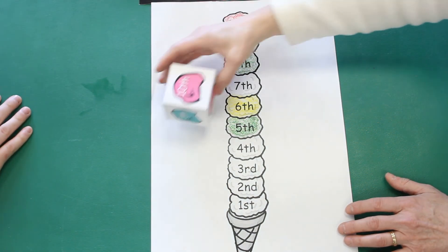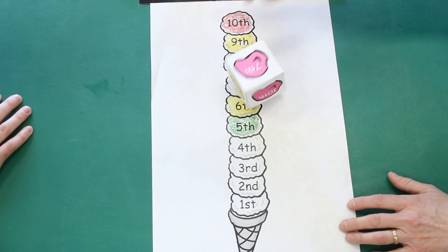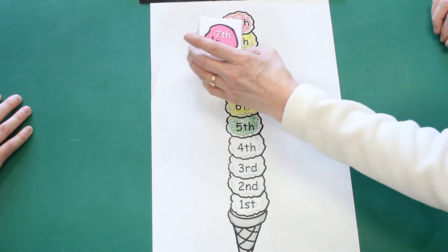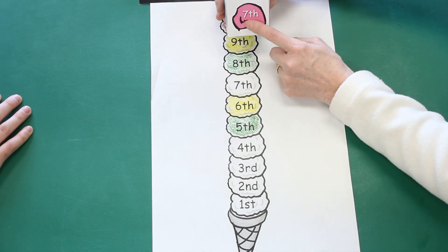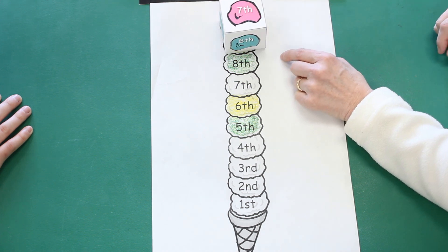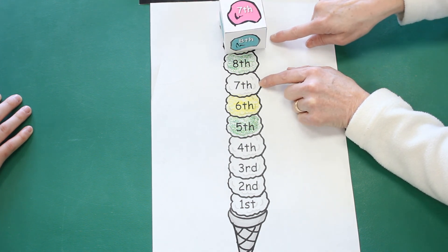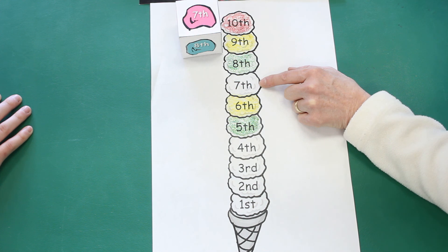Oh, tenth. Oh, oh, oh, look, I got the seventh scoop of ice cream. I'm going to color the seventh scoop of ice cream red.